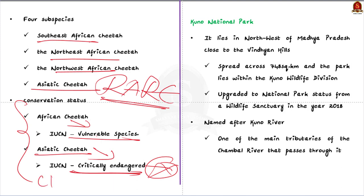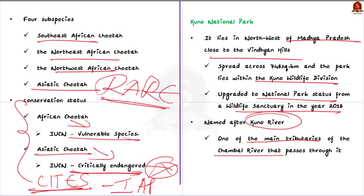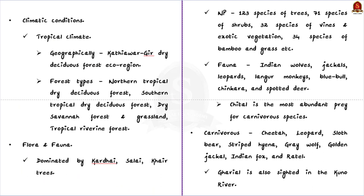Kuno National Park lies in the northwest of Madhya Pradesh, close to the Vindhyan hills. It spreads across 748 square kilometers and lies within the Kuno Wildlife Division zone. Kuno was upgraded to national park status from a wildlife sanctuary in 2018. It was named after the Kuno River, one of the main tributaries of the Chambal River that passes through it. This is where Asiatic cheetahs were reintroduced in India. Climatically, Kuno National Park mainly comes under a tropical climate.